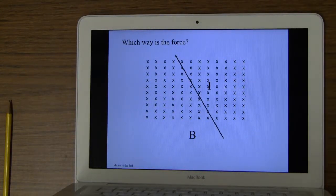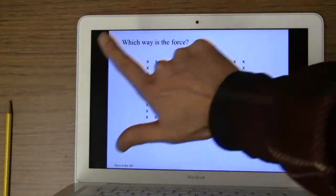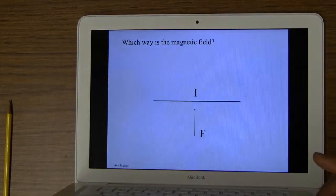All right, and then this guy would be the current that way, magnetic field into the page, this would be down and to the left. Let's try some more. I'm going to pause right there.